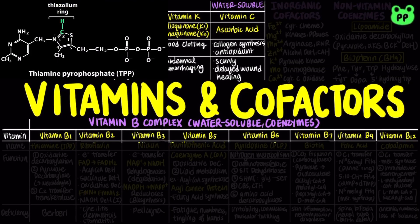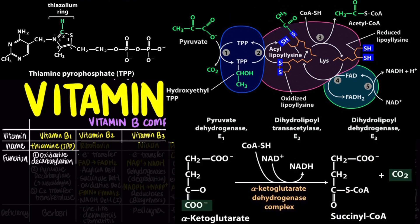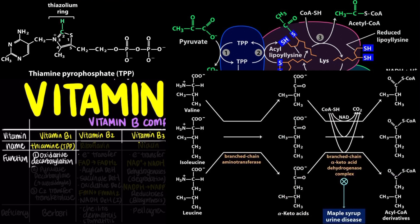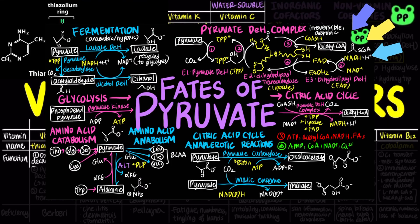Vitamin B1, also known as thiamine, is converted to its active form thiamine pyrophosphate, or TPP, in our body. It functions as a coenzyme in three main types of reactions. TPP transfers aldehyde groups during oxidative decarboxylation reactions catalyzed by pyruvate dehydrogenase, alpha-ketoglutarate dehydrogenase, and branched-chain amino acid dehydrogenase.